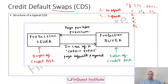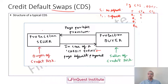In scenario 1, if there is no credit event, the protection buyer will keep on making periodic payments — let's call them C — to the protection seller. Every quarter, the protection buyer pays a premium C to the protection seller. In the scenario of no default, four payments get transferred over the year, and the protection seller doesn't have to pay anything.